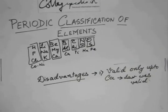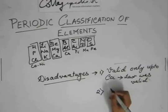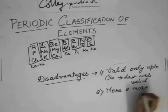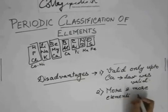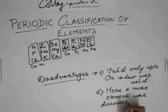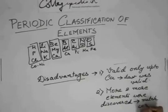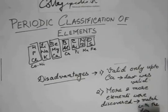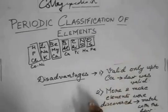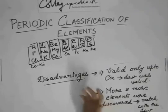So his law was valid only to calcium. Now, the second disadvantage was that as time passed, more and more elements were discovered, but they did not match with the law. I told you there were 114 elements discovered till now. And Newland made only 56. So after 56, the 57 till the 114th element,